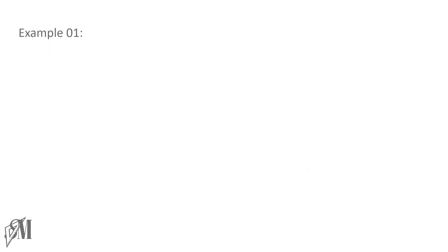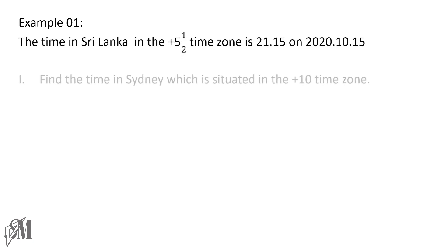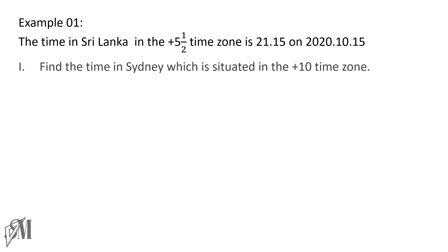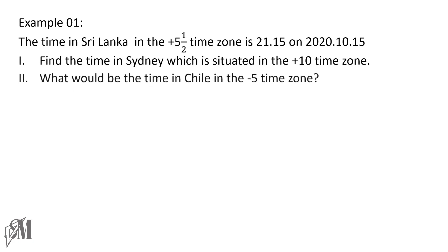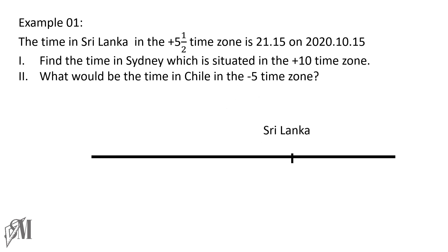Moving on to another example, the time in Sri Lanka in the +5.5 time zone is 21:15 on 2020.10.15, and we are going to find the time in Sydney, which is situated in the +10 time zone, and along with that, we are going to find the time in Chile, which is in the -5 time zone. So just like before, draw a number line, mark Sri Lanka. The time zone is +5.5, and then the time is 21:15, and the date we are going to write down, that is 2020 October 15th. And when it comes to Sydney, it is in +10 time zone. So let's mark the time zone.